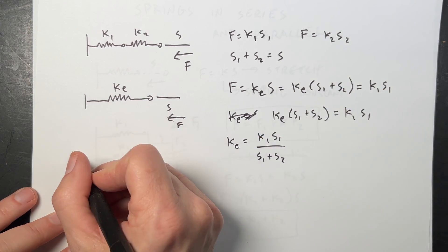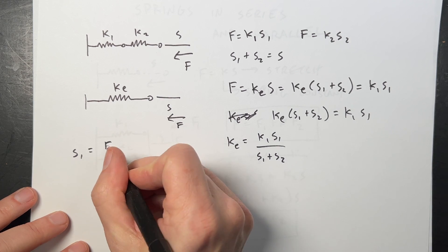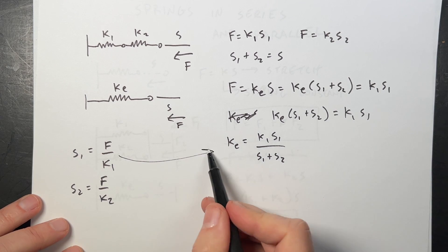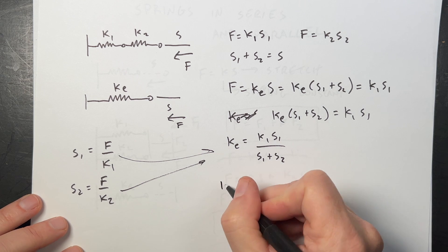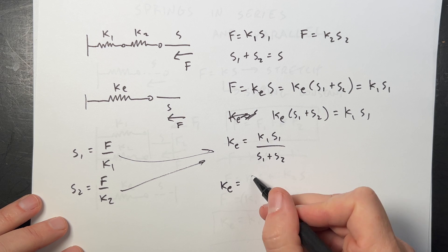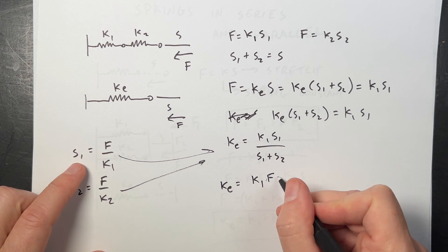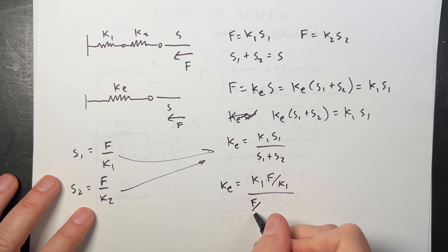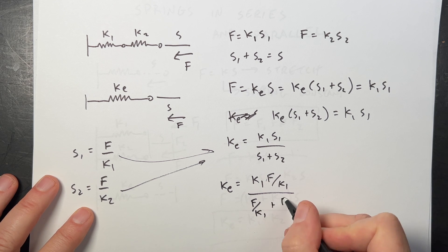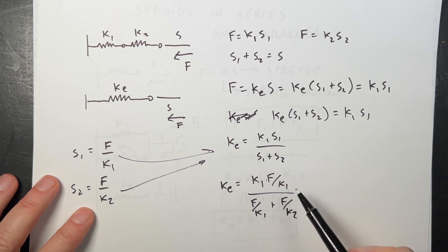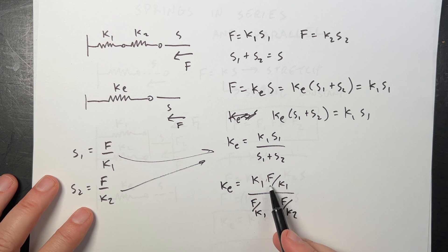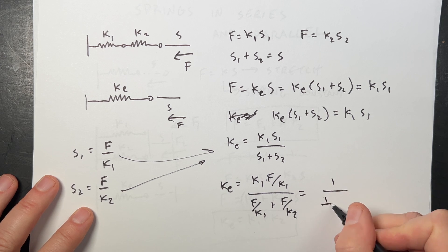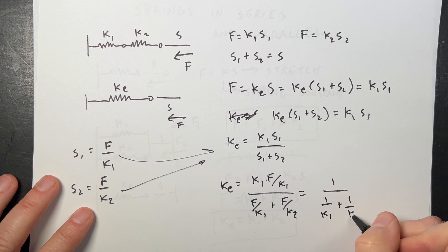So up here I can say S1 is equal to F over K1. S2 is equal to F over K2. Now if I put these in here, I get the following. K equivalent is equal to K1. S1 is going to be F over K1. And then down here I have F over K1 plus F over K2. I can divide everything by F. And then up here I have 1. So I have 1 over 1 over K1 plus 1 over K2.